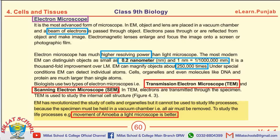The page which you are seeing has three red signs showing three types of short questions. The first one is about the transmission electron microscope and the other is the scanning electron microscope. A question may be asked: differentiate between transmission electron microscope and SEM. In TEM — transmission electron microscope — electrons are transmitted through the specimen, and TEM is used to study the internal cell structure. About SEM we will discuss on the next page.